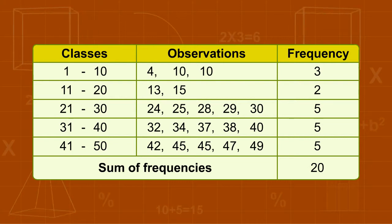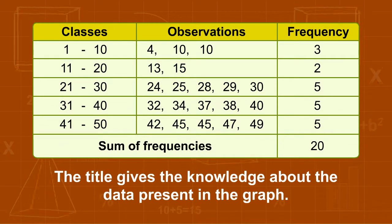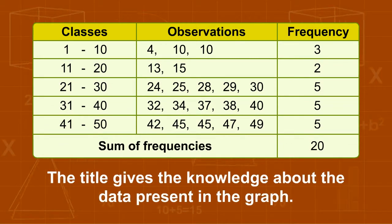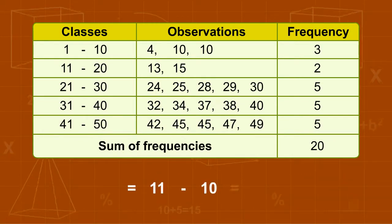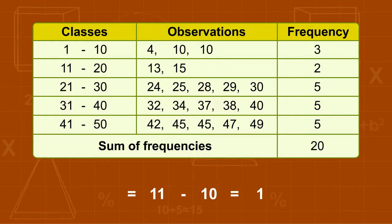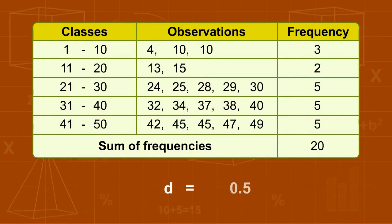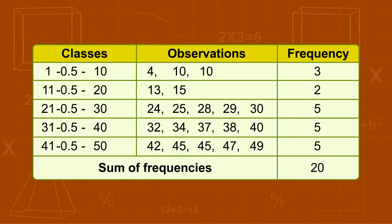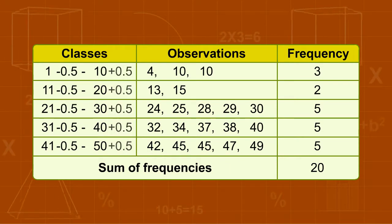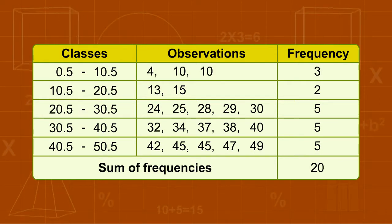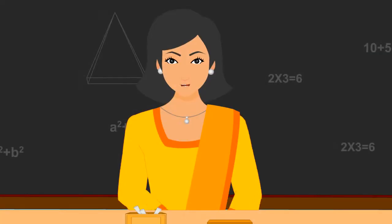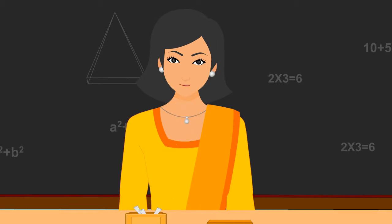From the table shown, we can see that the class limit is not real, so we will find them. Difference of upper limit of first class and lower limit of second class is equal to 11 minus 10 is equal to 1. Also, D is equal to 0.5. On subtracting D from lower limits and adding D to upper limits, we get the new class categories as shown here. We have created a new class with real class limits.